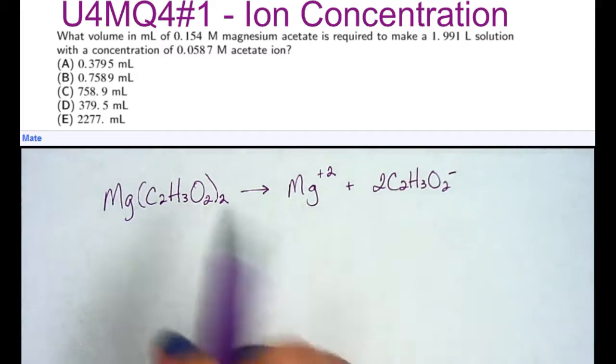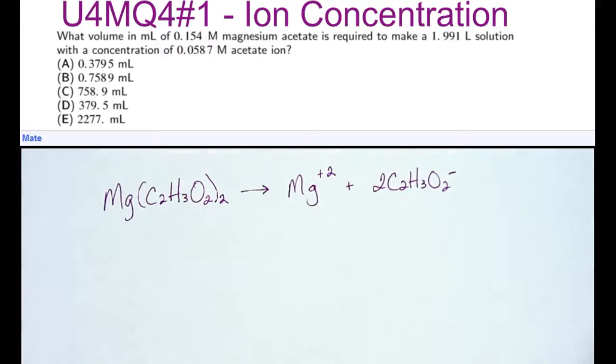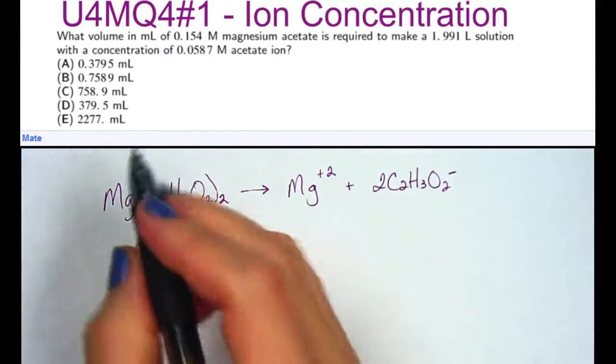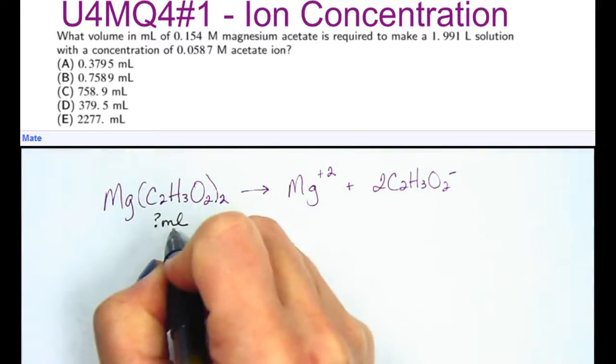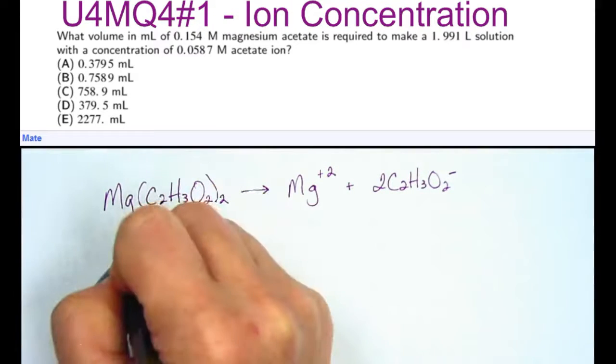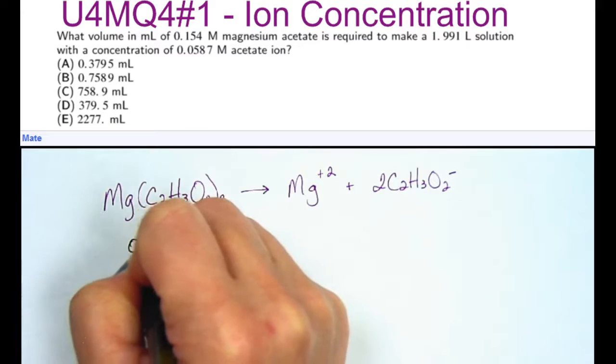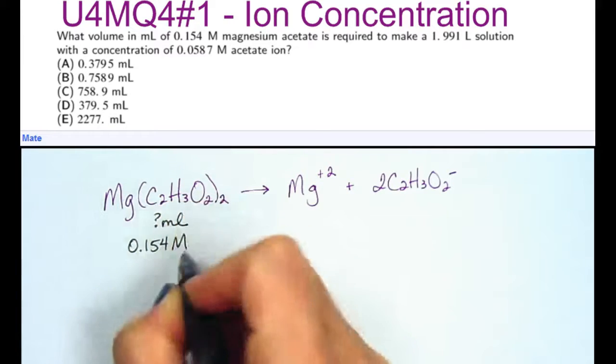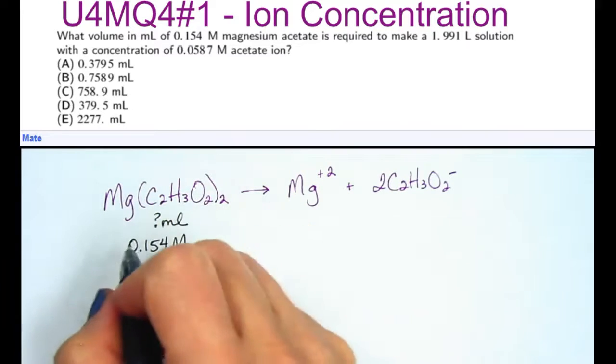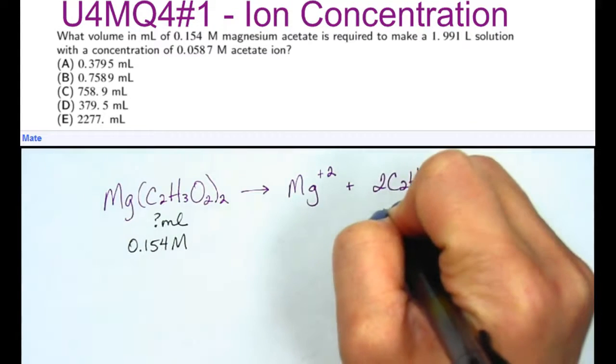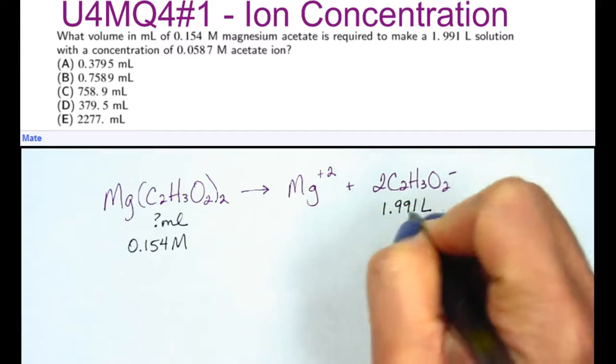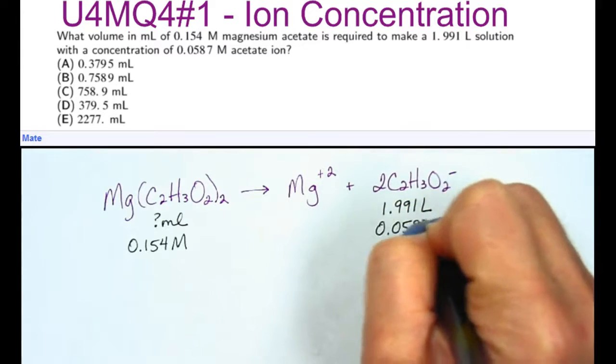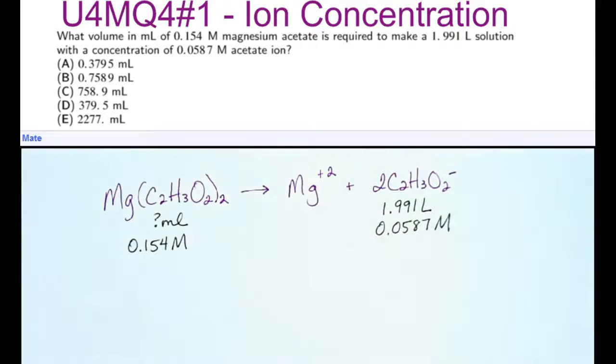And then I'm going to write underneath each what information corresponds with them. So I'm trying to find the volume in milliliters of this, if I have a 0.154 molar concentration of this, and I end up with a solution that is 1.991 liters worth of a 0.0587 molar solution.